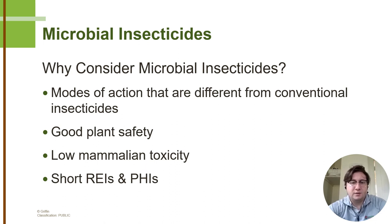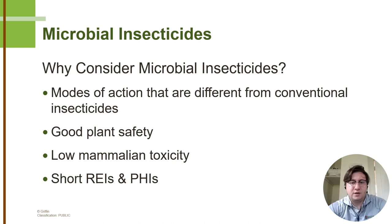To help alleviate our reliance on conventional chemistry, microbial insecticides can offer unique, non-resistant modes of action. These pesticides are typically very plant- and bloom-safe, can be applied in various ways, are environmentally friendly, and offer a broad label for ornamentals, herbs, and edibles. These low REI and PHI options are ideal for growers who deal with a bit of everything, which is becoming more and more common in the industry.